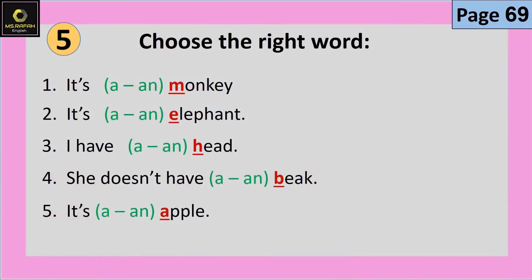Question number five: Choose the right word — اختر الكلمة الصحيحة. It's a monkey — 'monkey' starts with a consonant sound. It's an elephant — 'elephant' starts with a vowel sound, so we use 'AN'. I have a head — 'head' starts with a consonant. She doesn't have a beak — 'beak' starts with a consonant. It's an apple — 'apple' starts with a vowel.